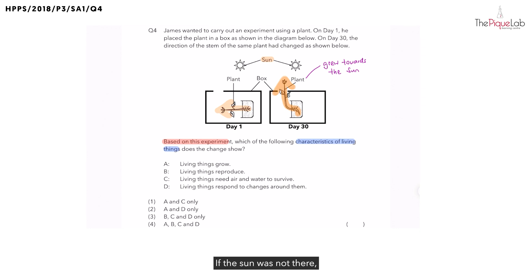Now, think about this. If the sun was not there and the plant cannot receive the sunlight through the hole in the box, do you think the plant will start growing towards the sun? No. So when it grew towards the sun, what characteristic of living things does it show us? It shows us that living things respond to changes around them. So let's write this out. When it grew towards the sun, that was its response. And the change over here is actually the presence of the sun. With this understanding, we are ready to take a look at the statements.